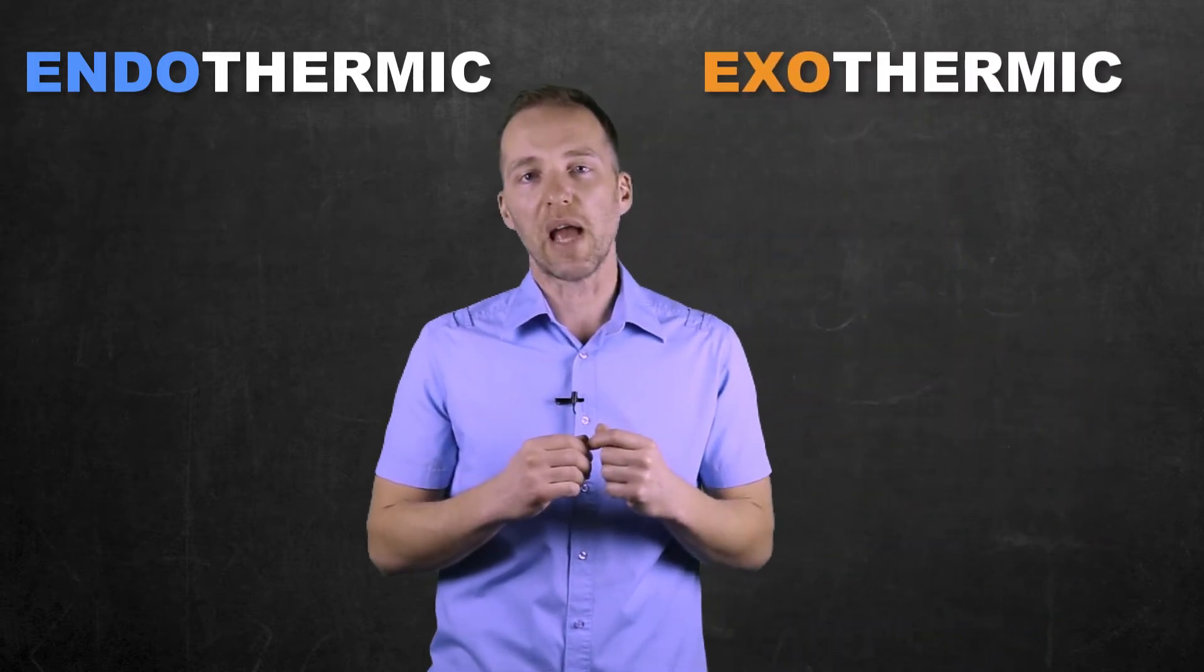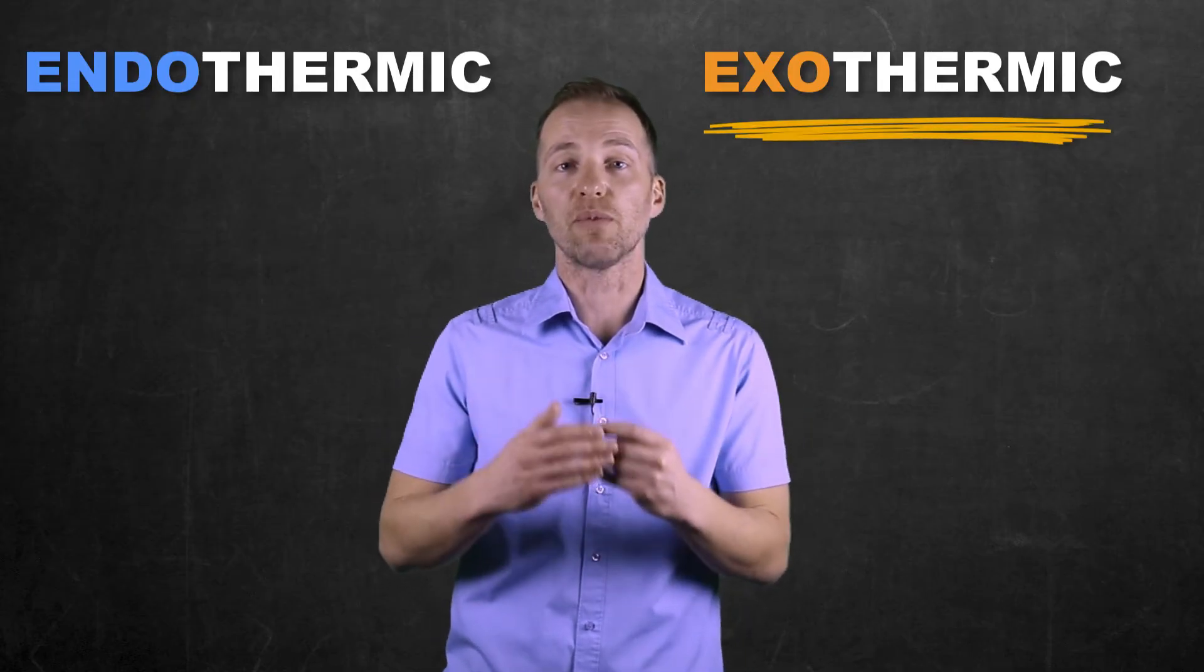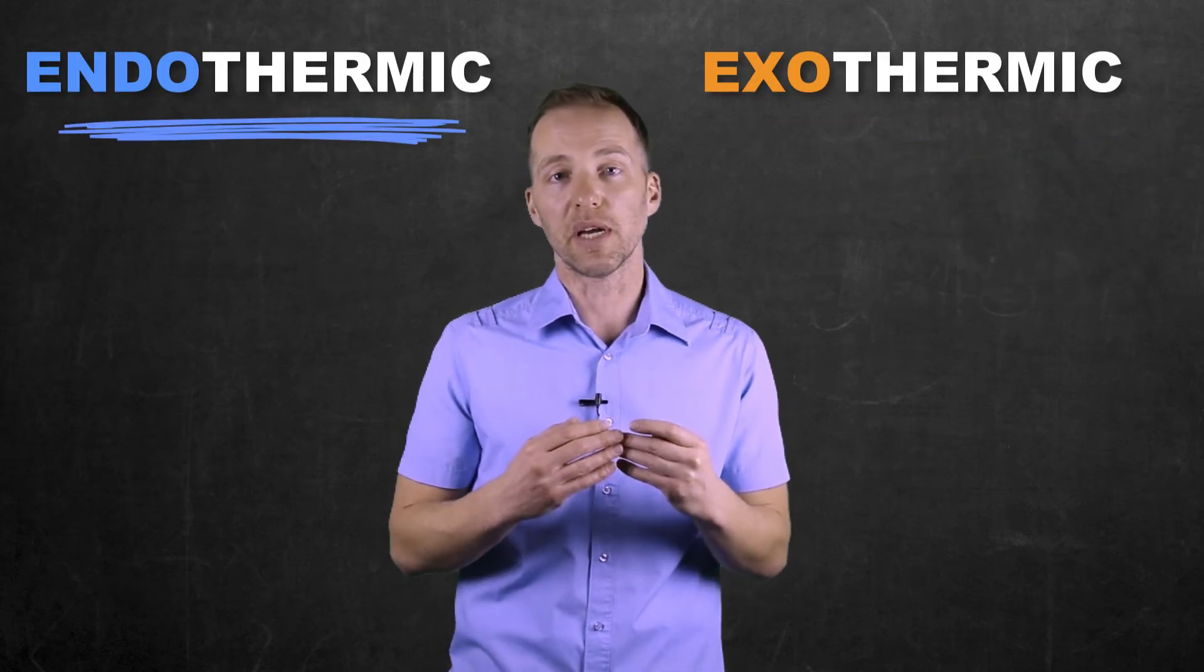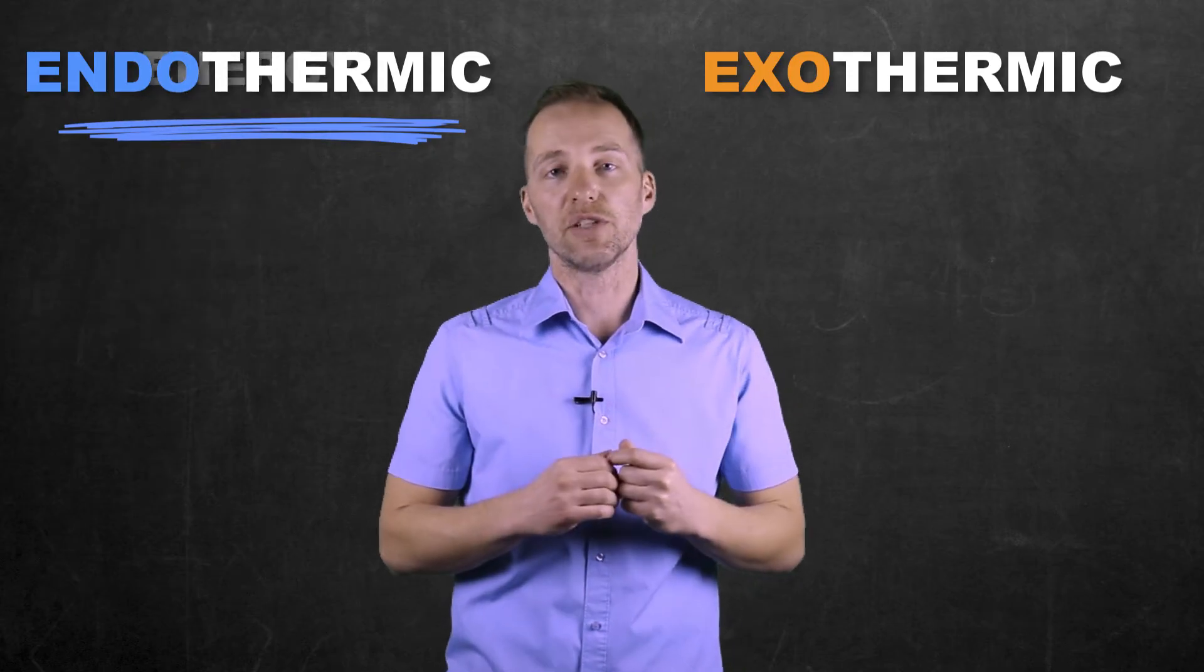So we have two types of reactions that we can talk about when we look at thermochemistry. We have exothermic reactions where there's a net release of energy to the surroundings, and we have endothermic processes where there is a net absorption or taking in of energy from its surroundings.